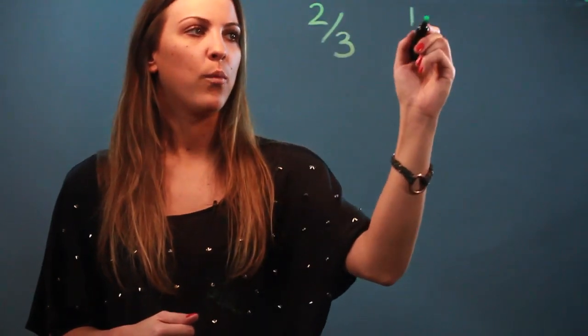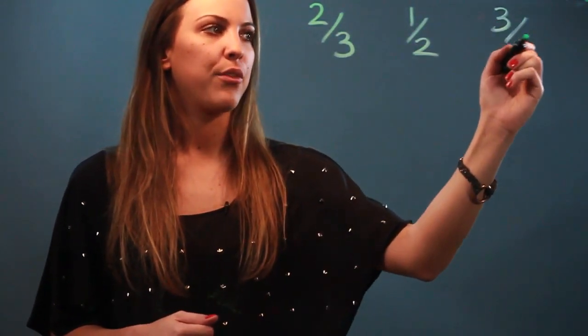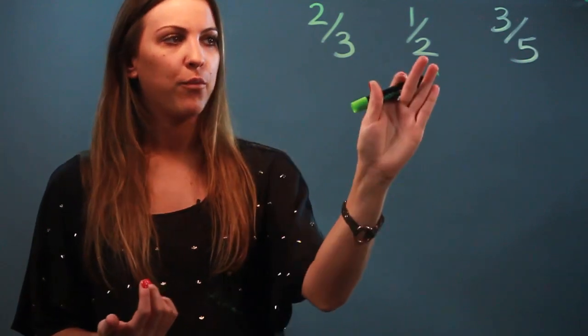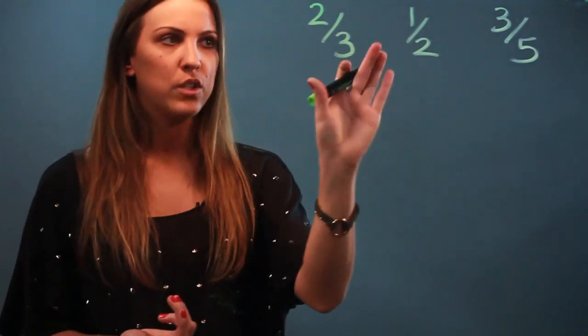So if we've got the three fractions, let's see, let's take two-thirds, one-half, and three-fifths. And you're trying to figure out if one-half does indeed lie between these two fractions.